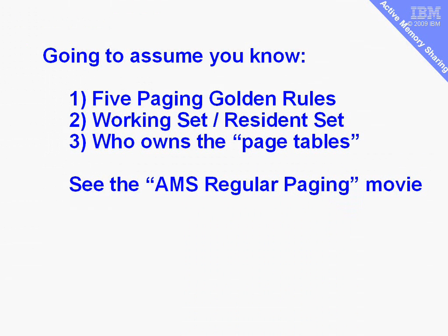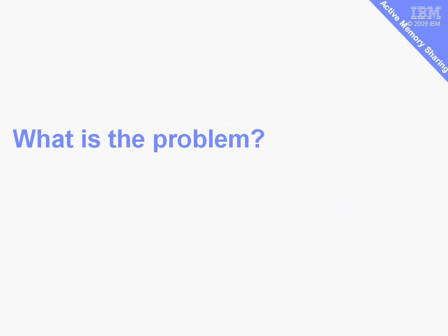In this movie, I'm going to assume that you know the five paging golden rules, what a working set or resident set is, and who owns the page tables. If you're not aware of that, I recommend you first look at the movie on AMS and regular paging. So what is the problem that AMS is going to look at?